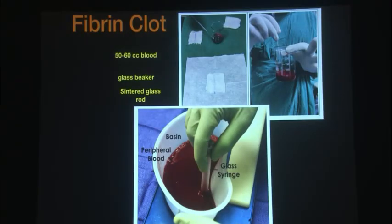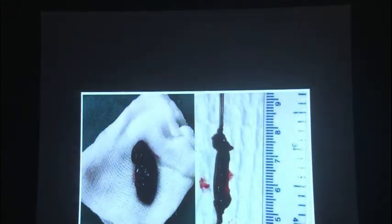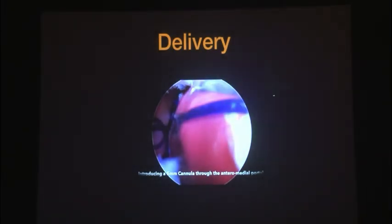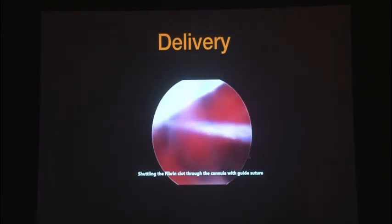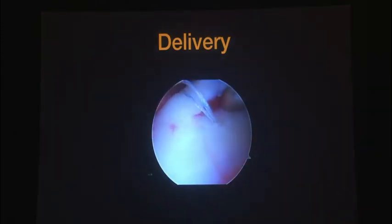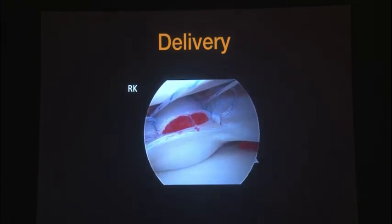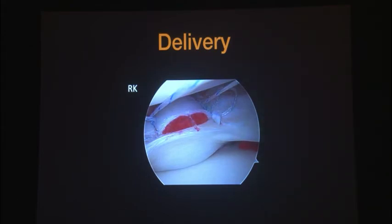Next is the fibrin clot — a trick you need in your kitty. Take 50 to 60 cc of blood. Use a glass beaker with a sintered glass rod, or a plastic tray with a sintered glass syringe, because static forces help the fibrin clot form. Stir for 15 to 20 minutes to get a clot, wash out the RBCs with saline, and you get a sticky clot that can be cut with a scalpel into multiple small pieces. To shuttle it into the joint, suture it with Vicryl sutures, use a plastic transparent cannula, pass your sutures without tensioning them, shove the clot in with a rod, and then tension your sutures once you confirm it is in the tear.